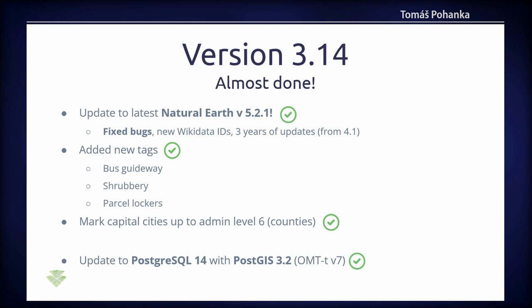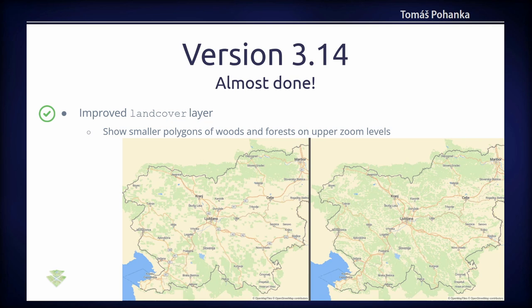What will be in the new version 3.14? One nice change is a new version of Natural Earth — version 5 — bringing three years of updates, bug fixes, and new IDs for Natural Earth features. There is also an improvement of land cover, so you can see more green areas — for example in Slovenia — at higher zoom levels.